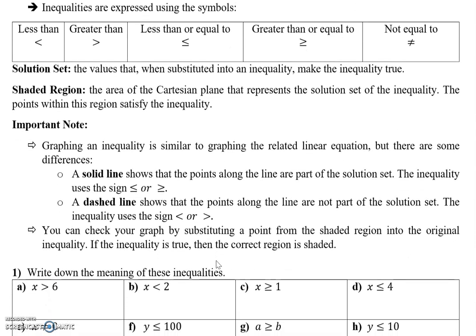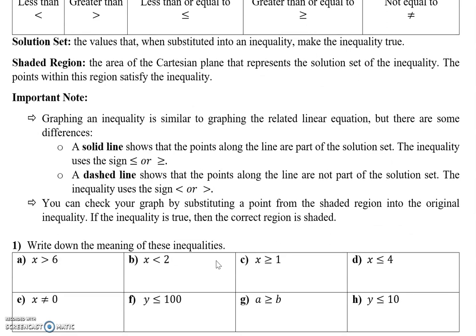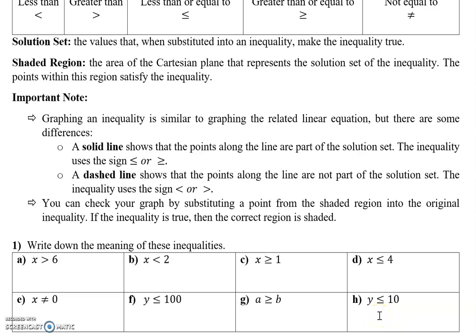Let's look at some inequality questions — we have about eight here. The question says: write down the meaning of these inequalities. Part A: x is greater than 6. Part B: x is less than 2. Part C: x is greater than or equal to 1. Part D: x is less than or equal to 4. Part E: x is not equal to 0. Part F: y is less than or equal to 100. Part G: a is greater than or equal to b. Part H: y is less than or equal to 10.